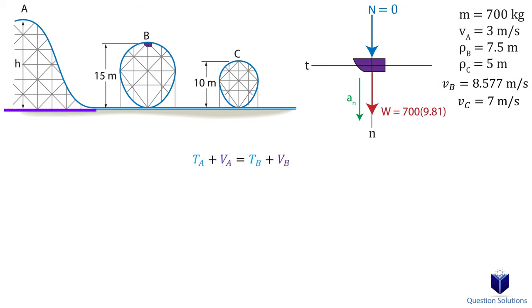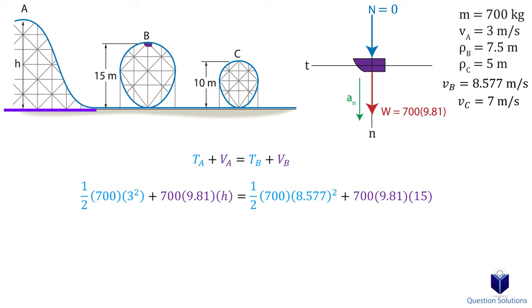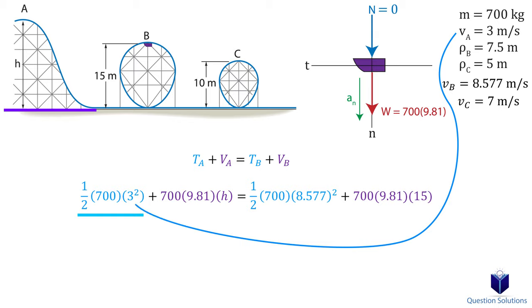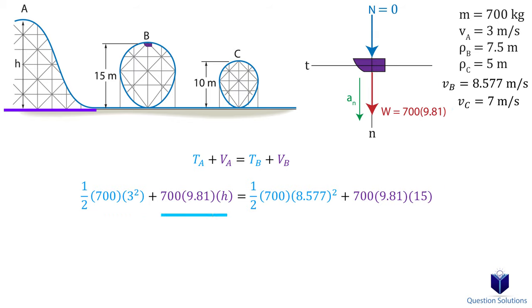We will establish the datum at the ground level and assume the minimum velocity required at loop B. So we're looking at the car from points A to B. We have the kinetic energy of the car which has an initial velocity of 3 meters per second. Then we add the potential energy at the top of the hill, which is mass times gravity times height. On the right side, we have the kinetic energy at point B — half times mass times the velocity at B squared — plus the potential energy, which is mass times gravity times 15 meters. Let's solve for height.